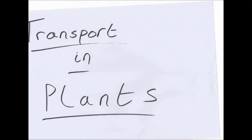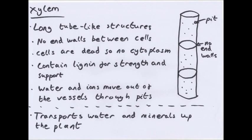Hello and welcome to my next video on transport in plants. Why do multicellular plants need transport systems? Very similar reasons to why animals need transport systems. Plant cells need substances like water, minerals and sugars to live, and they also need to get rid of waste products. They have a small surface area to volume ratio, so while plants could exchange substances by direct diffusion from their outer surface to the cells, this would be slow. So plants need transport systems.